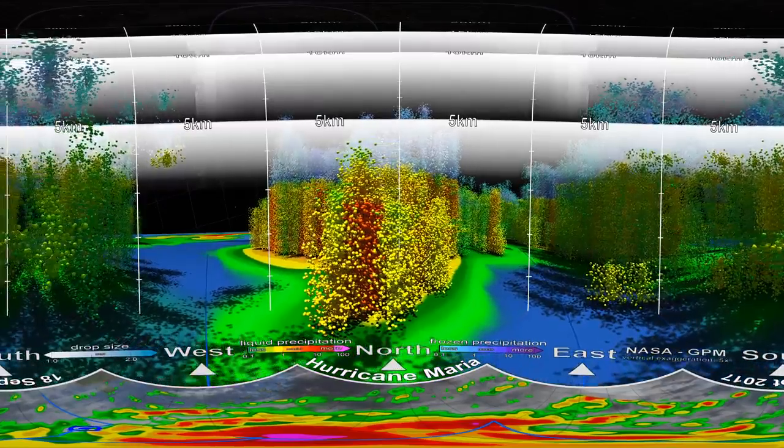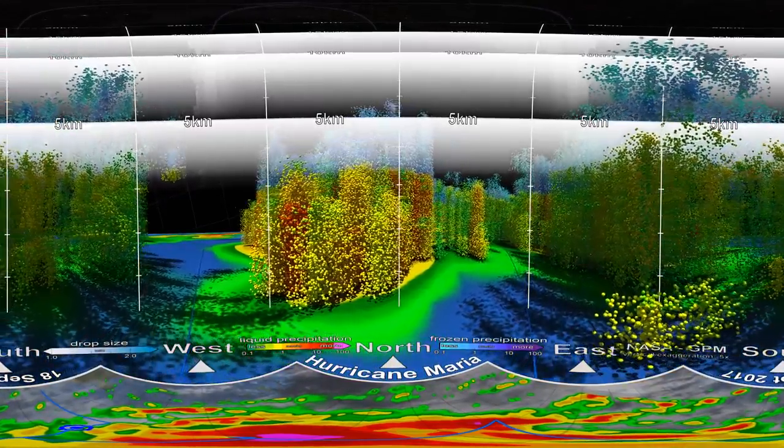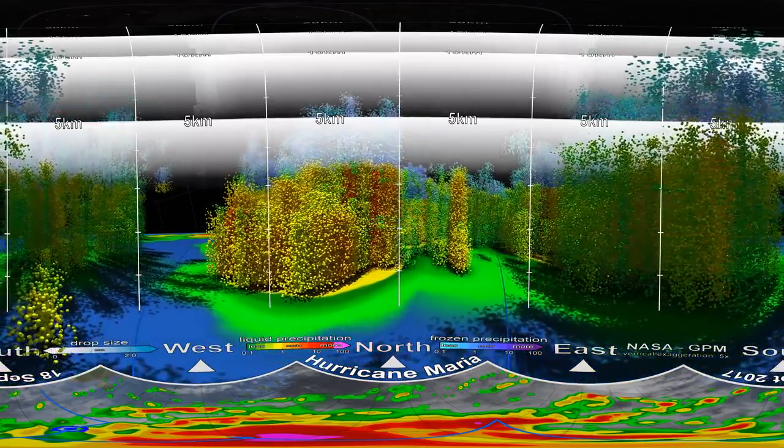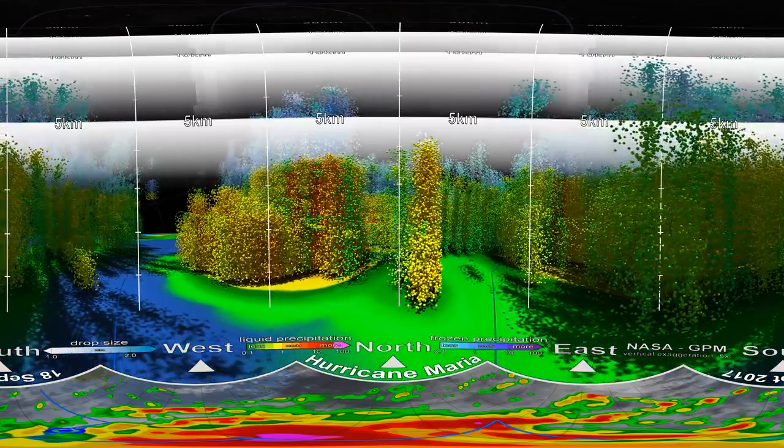The dots around you show areas of rainfall, where green and yellow show low rates and red and purple show high rates. The coloured areas below the dots show how much rain makes it to the surface.